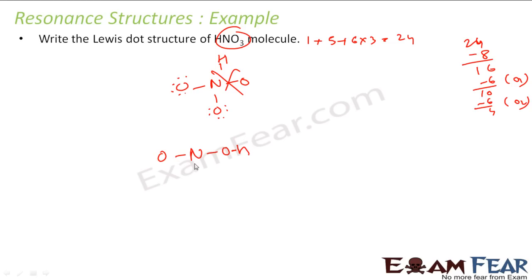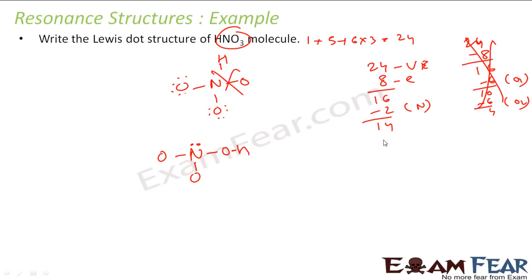So we started with 24 valence electrons, 4 bonds — 8 electrons gone, leaving 16 electrons. Nitrogen has 6, add 2 more — nitrogen happy with 14 remaining. Oxygen has 2, add 6 more — happy with 8 remaining. Next oxygen has 2, add 6 more — 2 electrons remaining. This last oxygen needs 4 but we only have 2 — still not possible. A double bond must be formed, so let us create a new structure with a double bond.